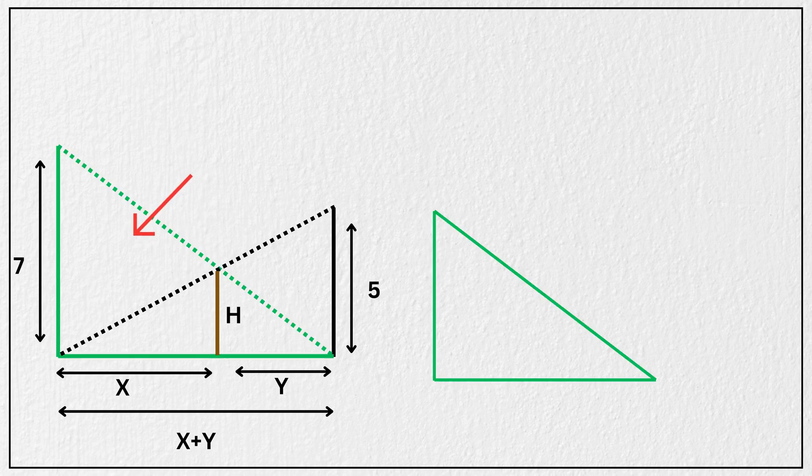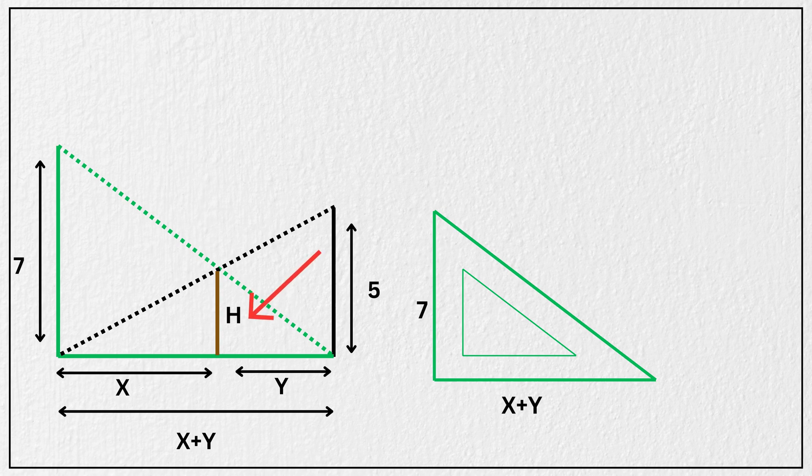Now look at this green triangle formed by the 7 meter pole. Its base is x plus y, and its height is 7. Now focus on this smaller triangle formed inside it. The base of this triangle is y, and the height is h.